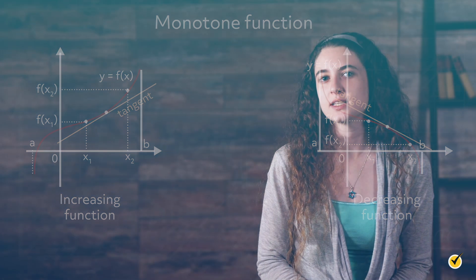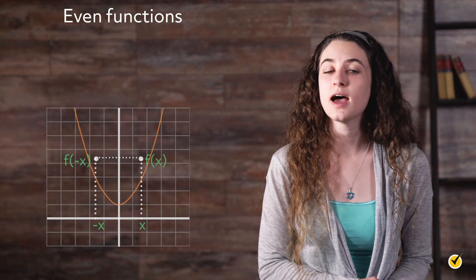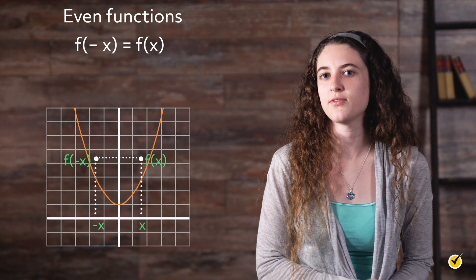Functions can also be characterized as even, odd, or neither. Even functions have vertical symmetry about the y-axis. In order to test whether a function is even, the following equation must be satisfied: f of negative x equals f of x.